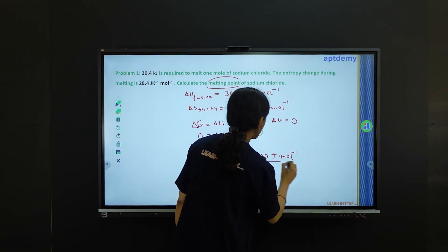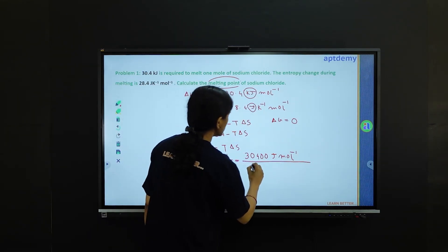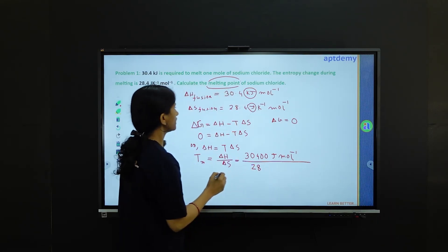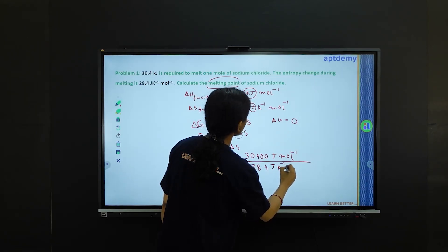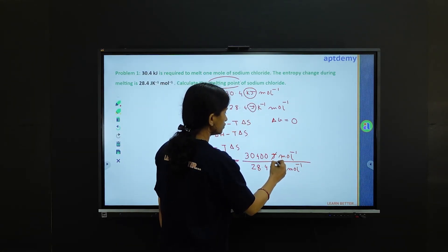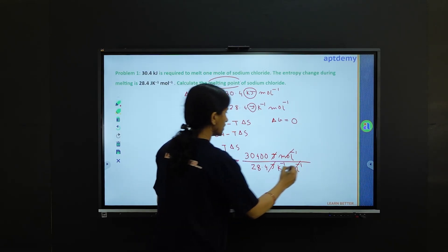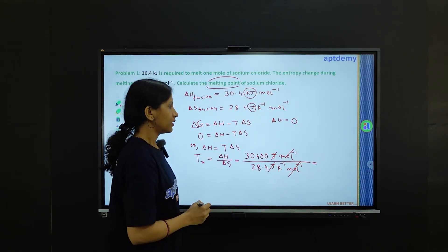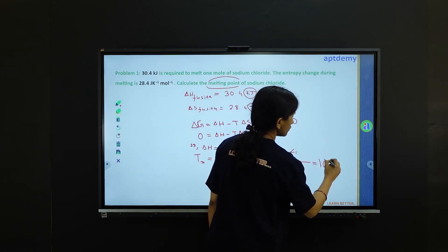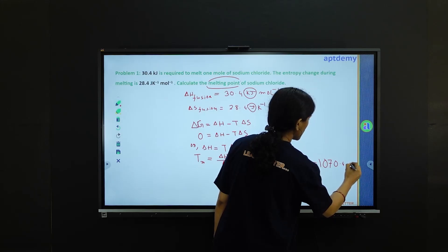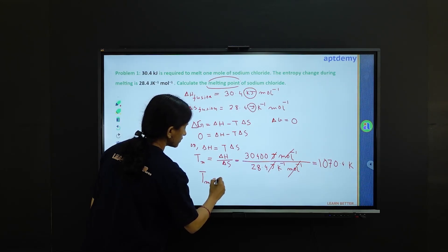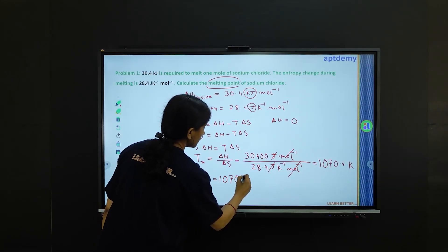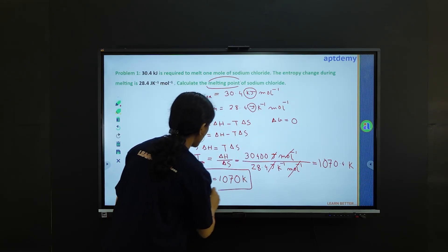In the denominator, we put delta S of fusion as 28.4 joule kelvin inverse mole inverse. Joule will cancel out, mole inverse will cancel out, and if you solve, this comes out as 1070.4 kelvin. So this is the melting point of sodium chloride — this is what they have asked.